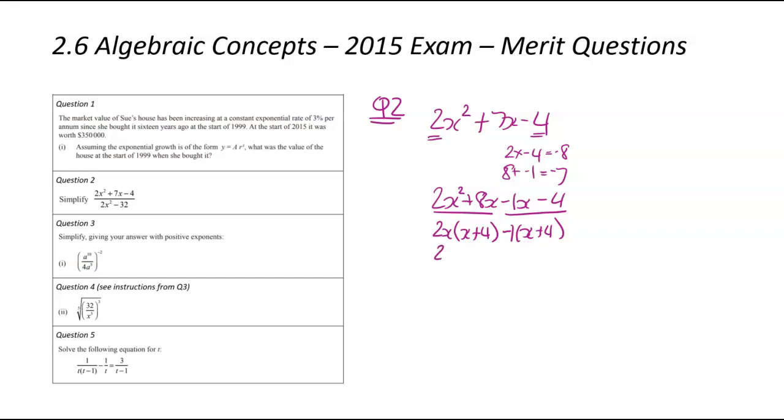We've got the same bracket coming up twice, which means we didn't do any silly math errors on our way. So the factorized version of that would be 2x minus 1 times x plus 4. We now need to do the same for the bottom. The bottom looks a bit easier. So we've got 2x squared minus 32. I can see they've got a 2 in common. So it's going to be 2 times x squared minus 16. And x squared minus 16 is a difference between two squares. That's going to be 2 times x plus 4 times x minus 4.